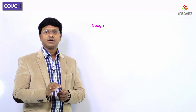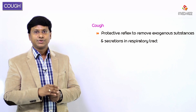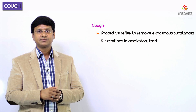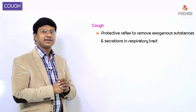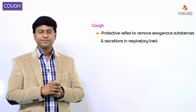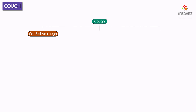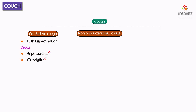Let me revise the important points of drugs used in the treatment of cough. Cough is a protective reflex to remove exogenous substances and secretions present within the respiratory tract. Cough is of two types: productive cough, which is with expectoration, and this is reduced by expectorants and mucolytics.